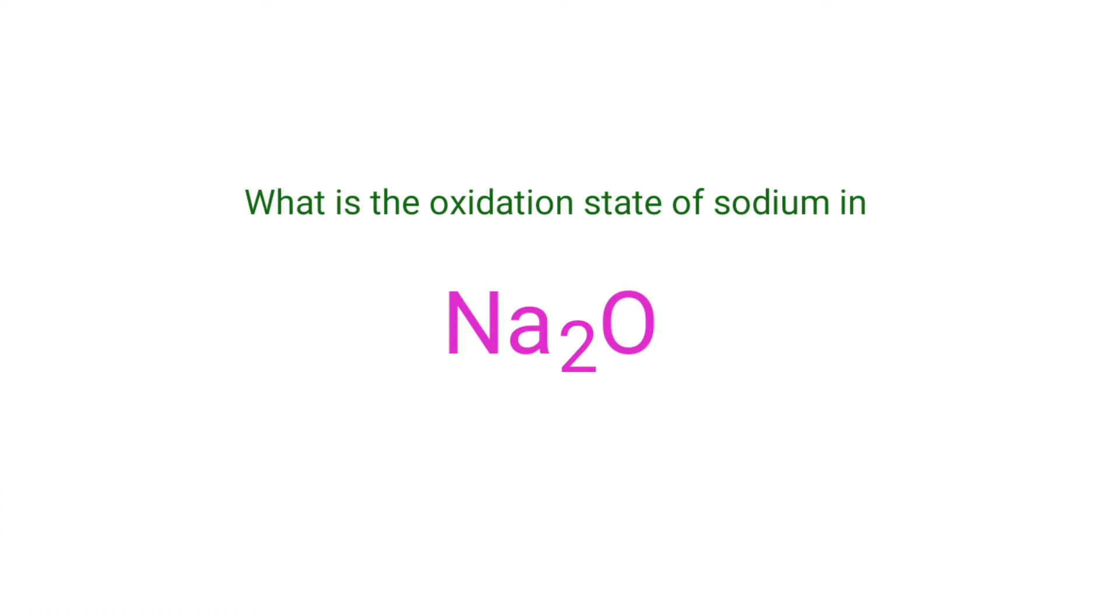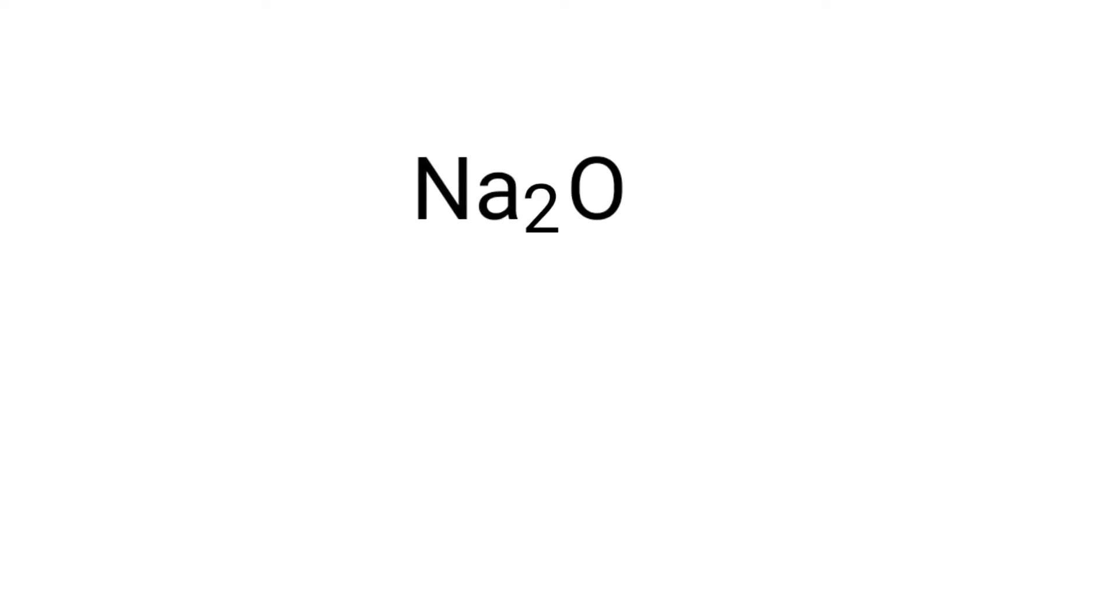What is the oxidation state of sodium in sodium oxide? We can use the oxidation number rules to determine oxidation numbers. Sodium oxide is a neutral compound with overall oxidation number zero. Therefore, we know that the sum of the oxidation number of the atoms is equal to zero.